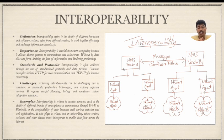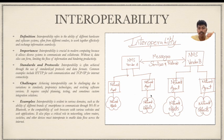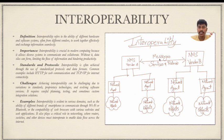Now, what if we have a system from another vendor — for example, Vendor B? The same system structure is followed in Vendor B, but here the communication between these two vendor systems takes place with messages, services, and protocols being shared effortlessly and seamlessly, with no error or delay.